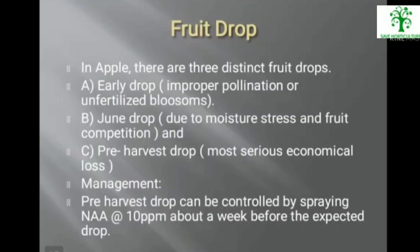In apple there are 3 distinct fruit drops: early drop due to improper pollination or unfertilized blossoms; June drop due to moisture stress and fruit competition; and pre-harvest drop, which causes the most serious economic loss. Pre-harvest drop can be controlled by spraying naphthalene acetic acid at 10 ppm about a week before the expected drop.